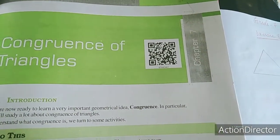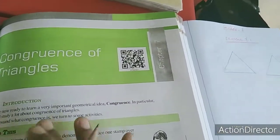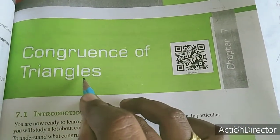Hi dears, in last class we completed chapter 6. Now we will move to chapter 7. Chapter 7 is congruence of triangles.